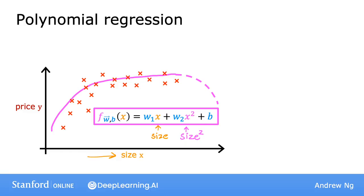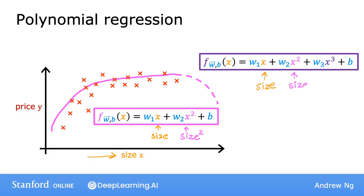So then you may choose a cubic function where we now have not only x squared, but x cubed. So maybe this model produces this curve here, which is a somewhat better fit to the data because the size does eventually come back up as the size increases.